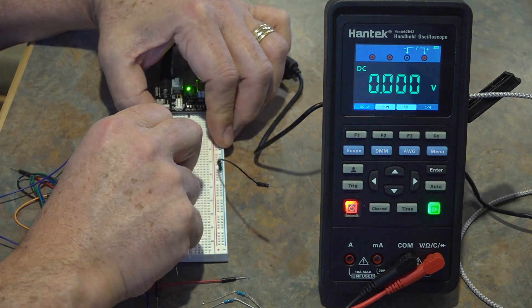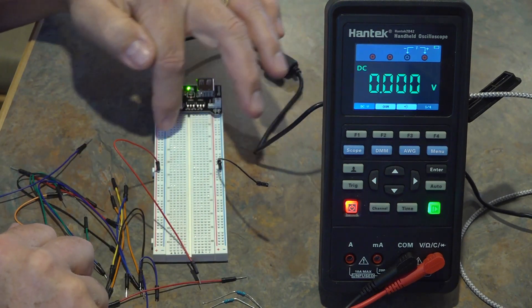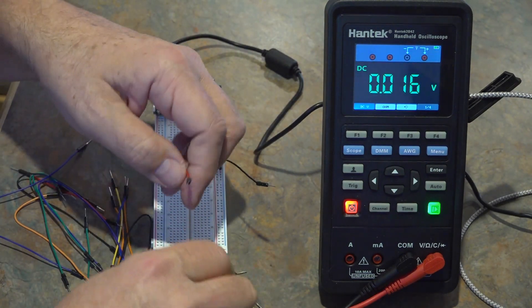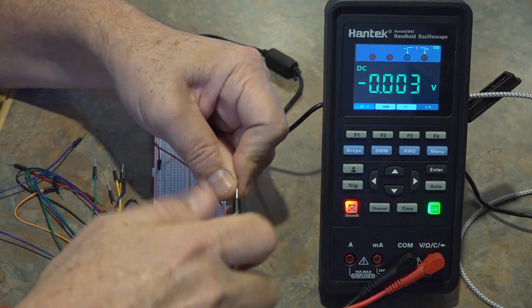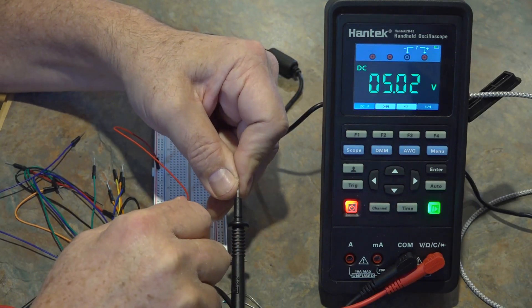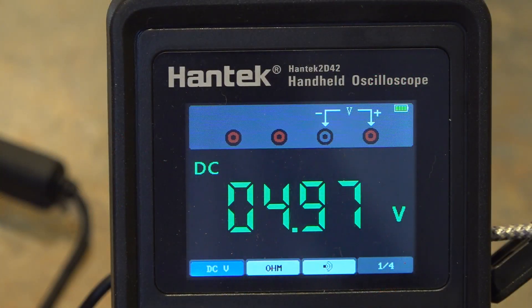So now I'm going to slide over to the plus 5 volt rail but I can still keep the ground on the other rail because like I said the ground is common between the two power supplies. So again the negative on the negative, the positive on the positive on the 5 volt rail.